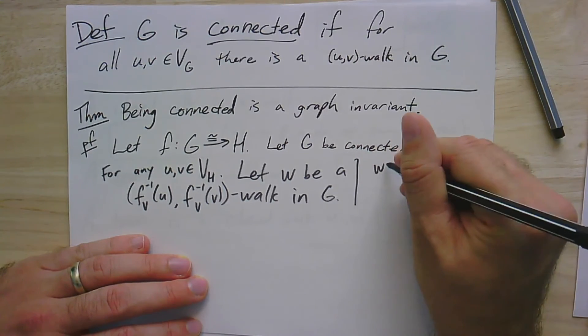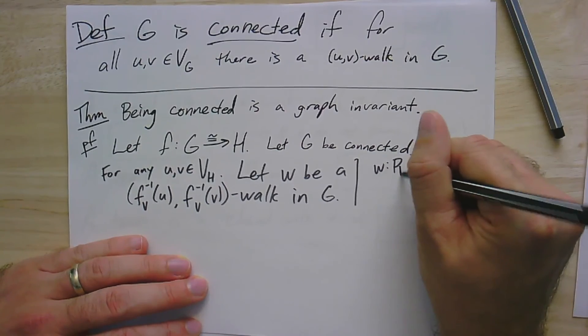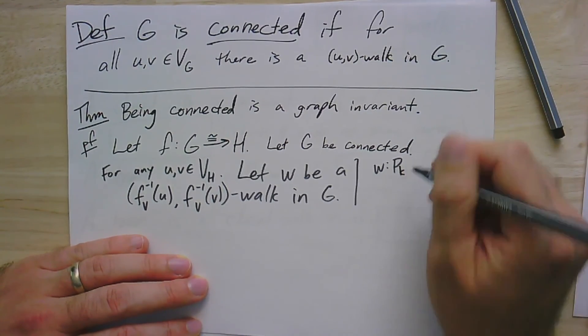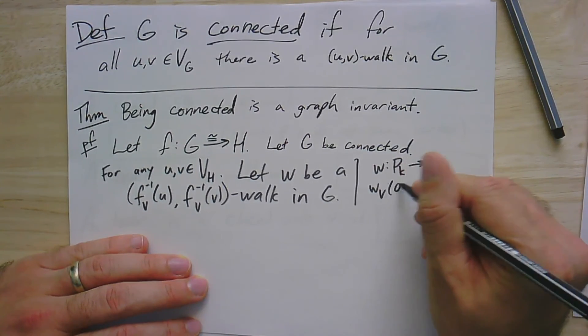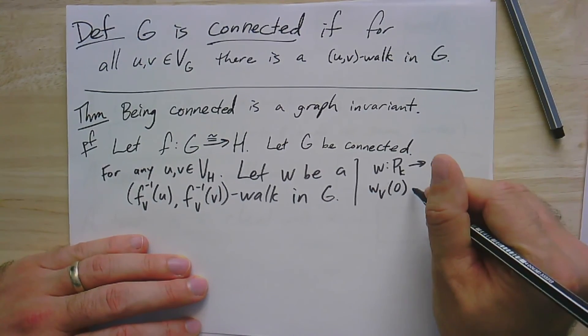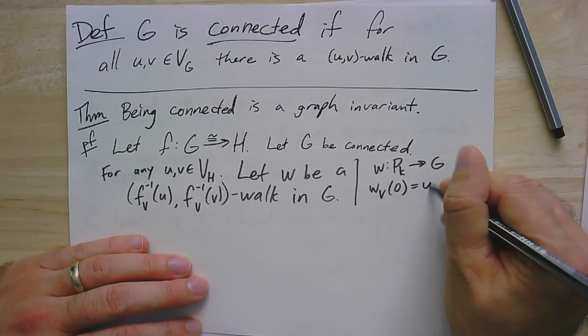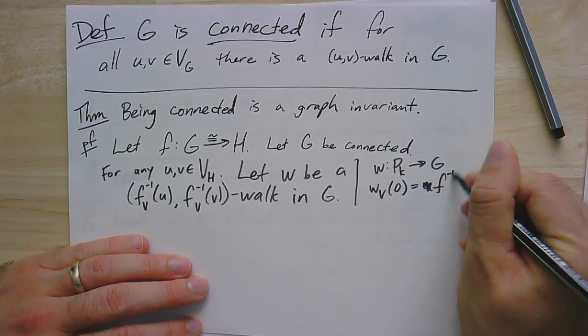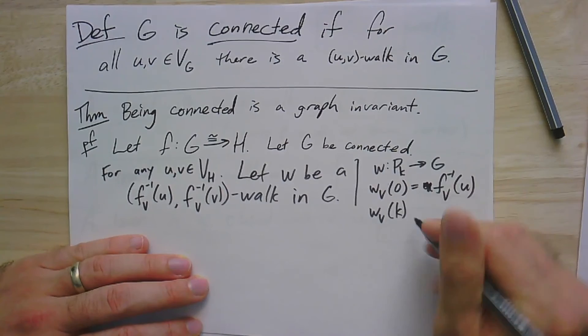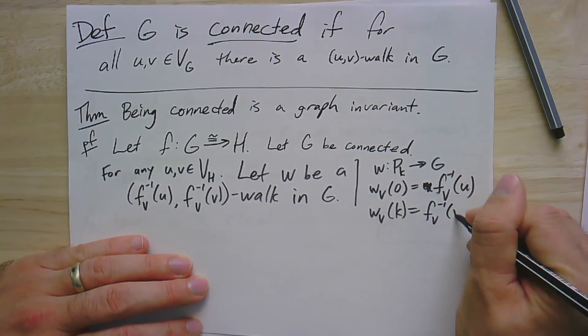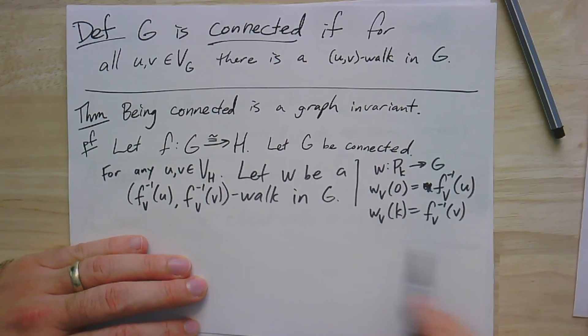Just a reminder of our types here, let's just be clear. W is a map, it's a homomorphism from some path, let's call it length K, into G. W_v of zero, that is the first vertex in the path, is going to map to F inverse of u. And the last vertex in this walk is F inverse of v. So it's a walk, it's a homomorphism from the path into the graph, it starts at this vertex and ends at this vertex.